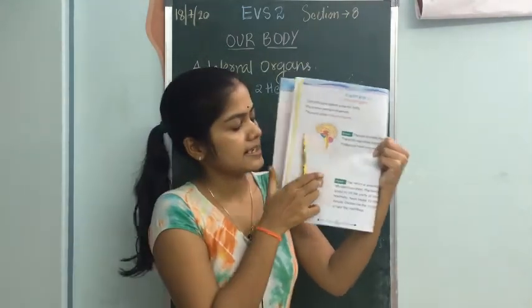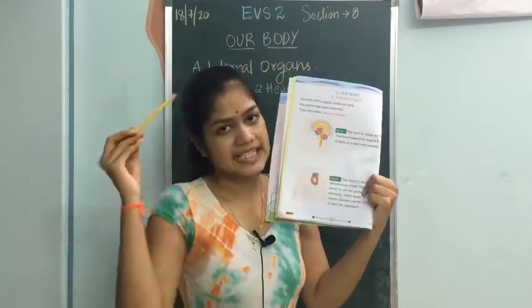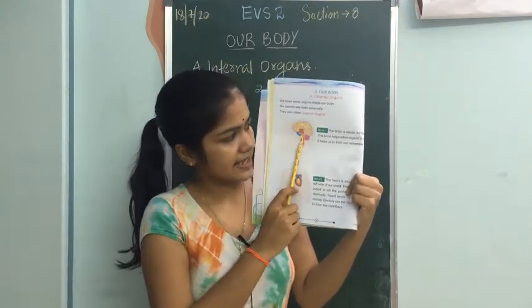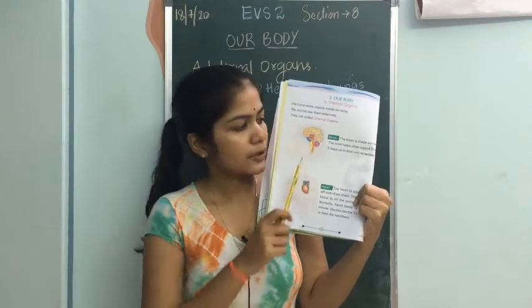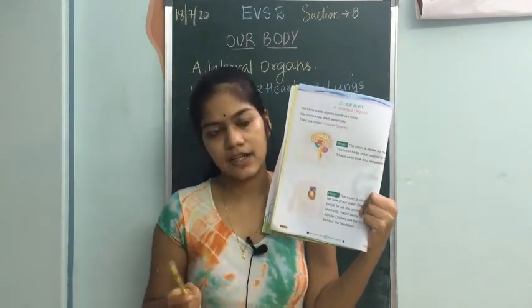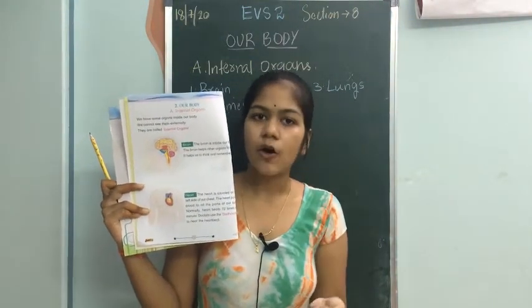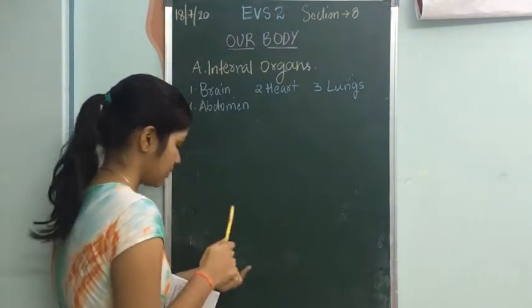The brain is present inside the head. You can see it here — this is the brain. It is located inside the head. The brain has two functions: first, it orders all the other body parts to function properly, and second, it helps us in thinking and understanding.